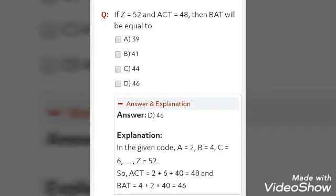C equals 6 and so on. Then when we will come to Z, that is the last letter of alphabet, it will become 52. So we are going with the table of 2. We are following the multiples of 2. So ACT equals 2 plus 6 plus 40, that equals 48 and BAT equals 46.